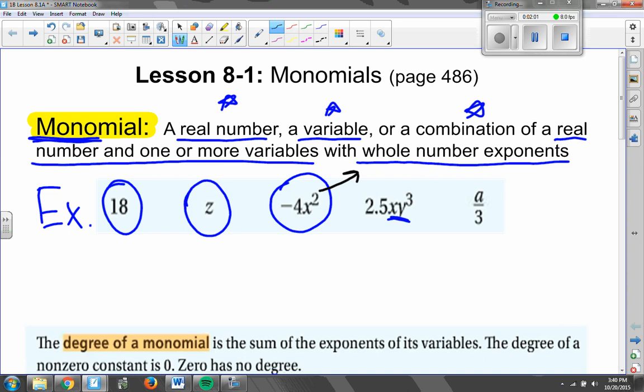We see the same thing in the next one. There we have two different variables, one of which has a whole number exponent. 2.5 is a number, x is a variable, and y to the third is a variable with whole number exponents. If we don't see an exponent on this x right here, we can assume that that is x to the first power. 1 is definitely a whole number, so that is most definitely considered a monomial.